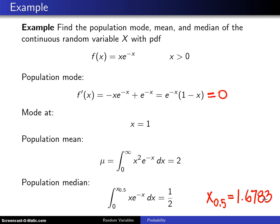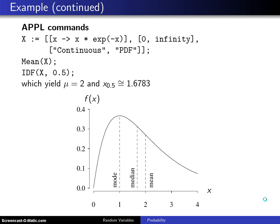One question that might come up is can this be done in the language APPL, and the answer is yes. Here are some APPL commands to find the mean and median. The first statement defines the random variable X to have probability density function xe^(-x). The second list defines the support from 0 to infinity, and the third list has 'continuous' and 'PDF' in it.